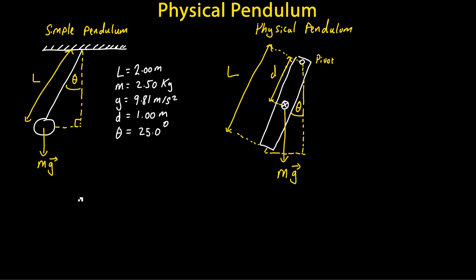First, let's write out the equations for the simple pendulum and for the physical pendulum. I've already given you these equations earlier in this video. For the simple pendulum, the period of the pendulum is equal to two pi multiplied by the square root of the length divided by the gravitational acceleration. The mass and the angle for a simple pendulum do not matter here.